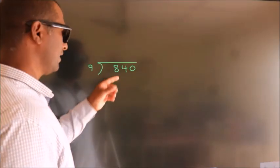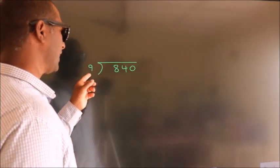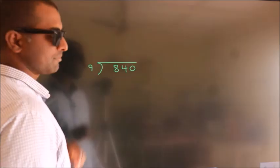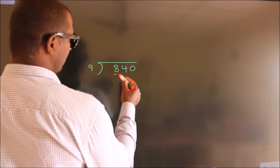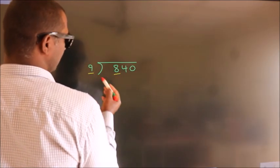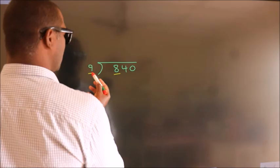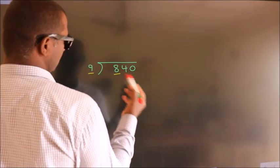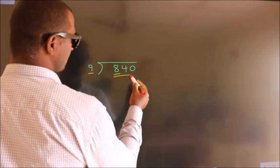How to divide 840 by 9? See, here we have 8, here 9. 8 is smaller than 9, so we should take two numbers: 84.